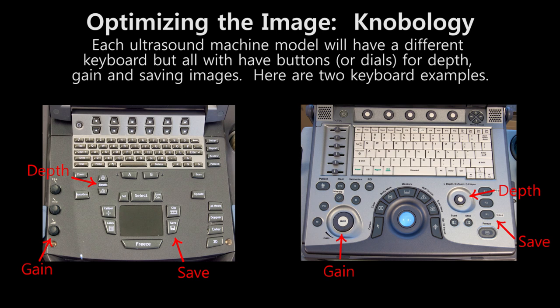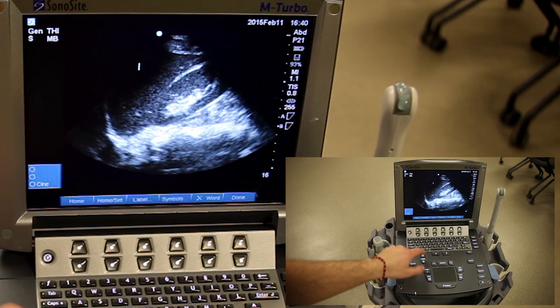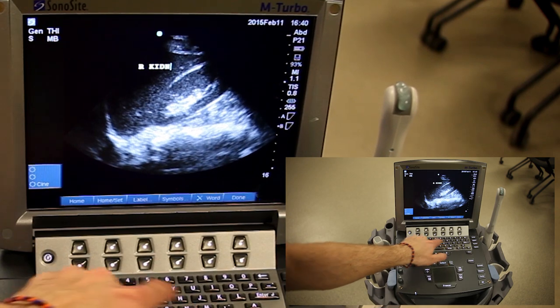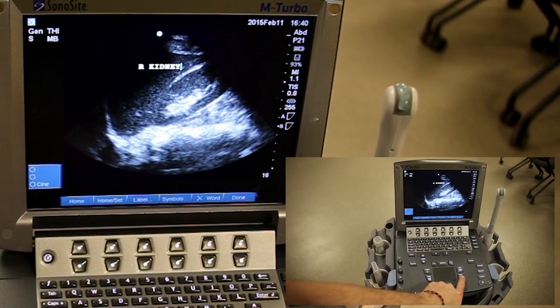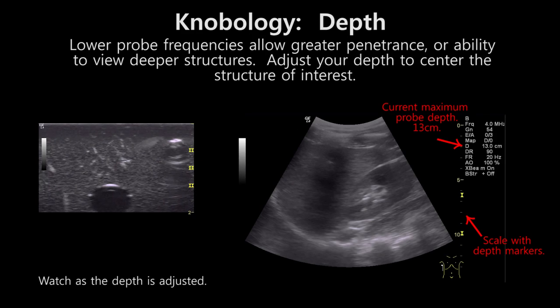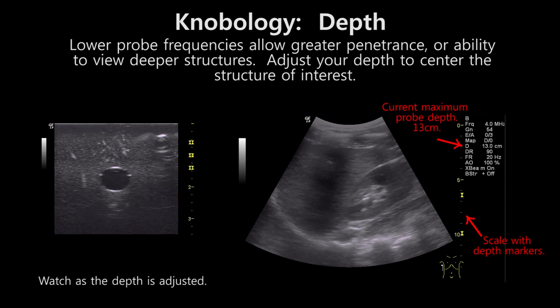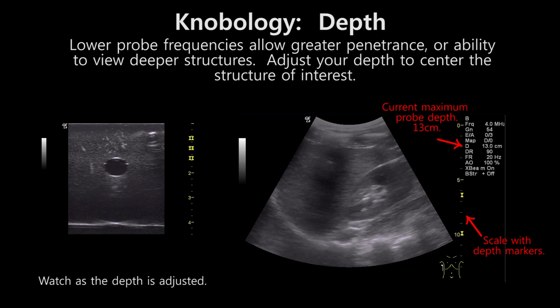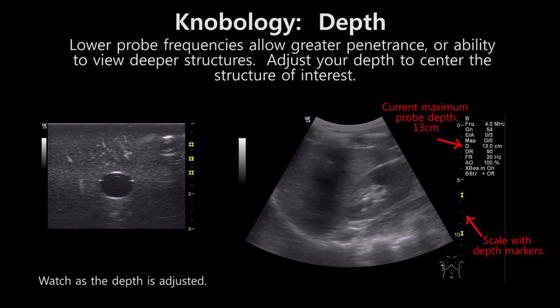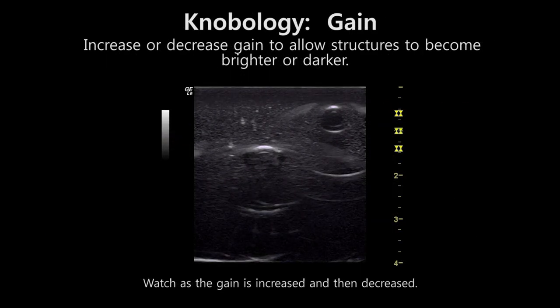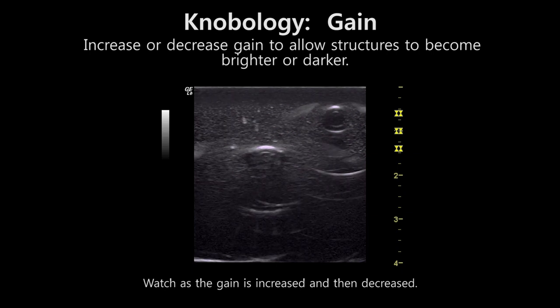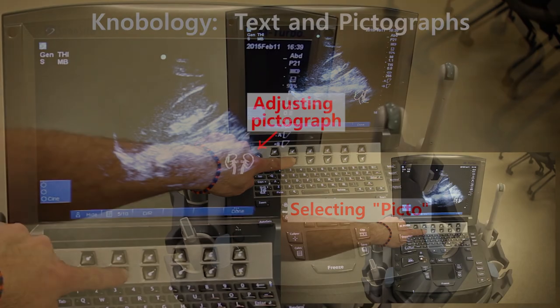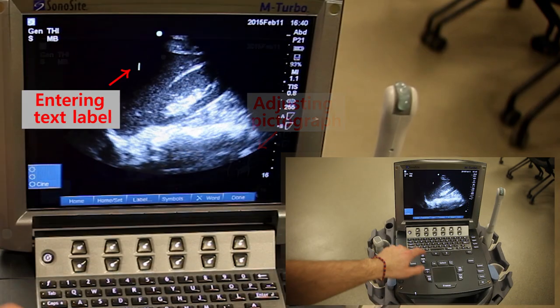Knobology. Once the tissue of interest has been identified, the image should be optimized by adjusting different parameters on the machine. The image should speak for itself, being of good enough quality that the structure being viewed is identifiable. Labels or pictographs should be used to help fully understand where the image was obtained, such as the left or right side of the patient. Increasing the depth allows for visualization of deeper structures. The proper depth setting is usually determined by what structure is being imaged and which probe is being used. Increasing the gain will amplify the reflected signal and effectively make everything brighter, though the downside is that this will increase noise as well as signal.